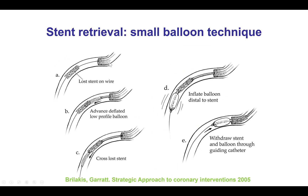What we do is advance a small balloon through the lost stent, then inflate the small balloon — usually 1.0, 1.2, or 1.5 mm — inflate it distally, and then pull the balloon back, which often brings the lost stent into the guide catheter. Unfortunately, this failed here, and the likely reason was that the stent was deformed, which was probably the cause of the stent being lost in the first place.